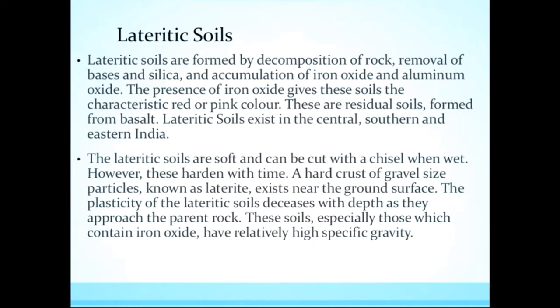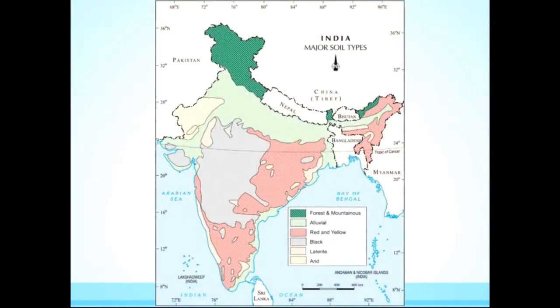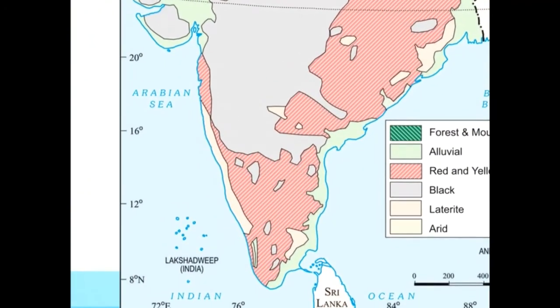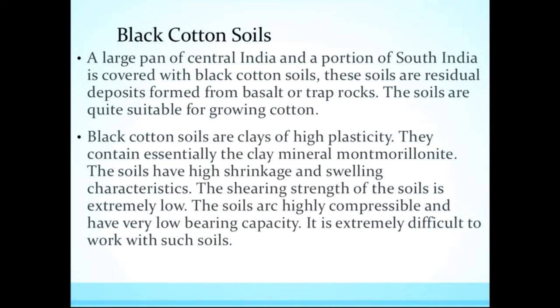Lateritic soils are formed by the decomposition of rock, removal of bases and silica, and accumulation of iron oxide and aluminium oxide. The presence of iron oxide gives these soils their characteristic red and pink colors. Lateritic soils exist in central, southern and eastern India, as shown in the diagram.